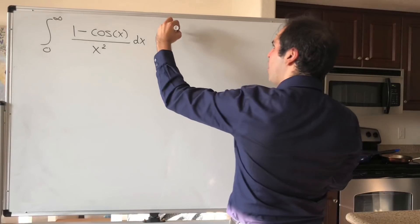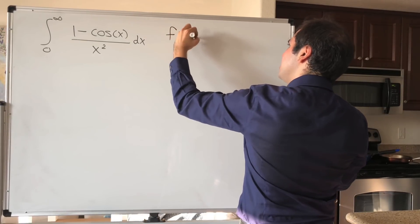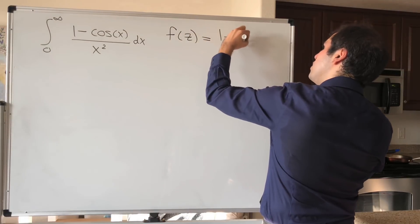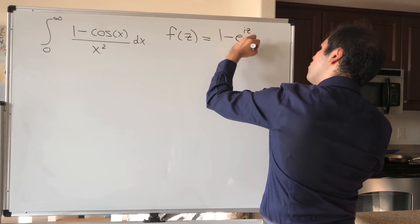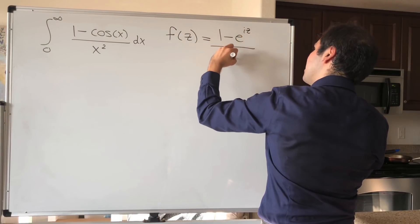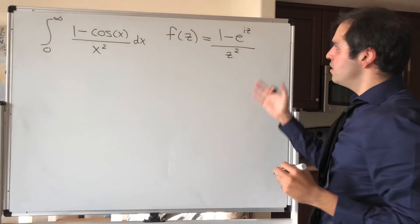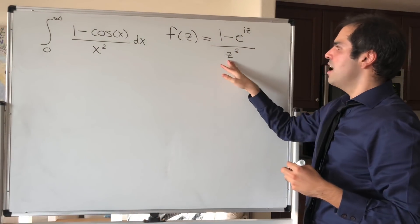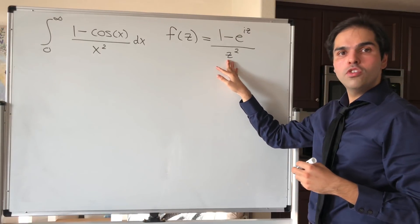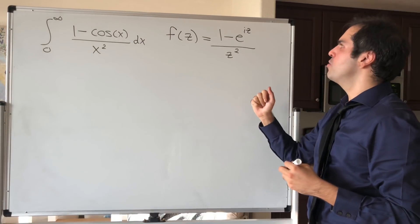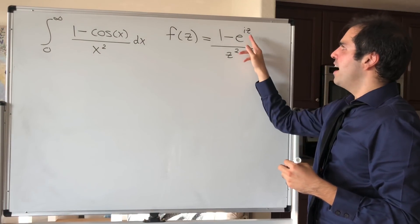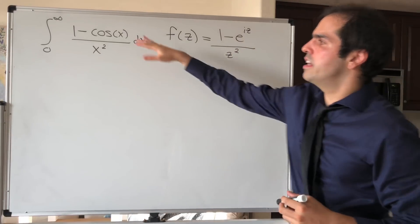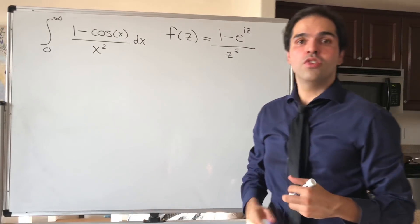So consider the following function: f of z equals (1 minus e to the iz) over z squared. The reason we're choosing this function is because at the end we'll be able to replace z by a real number x, and then we'll be able to take the real part of this to get our original integral back.